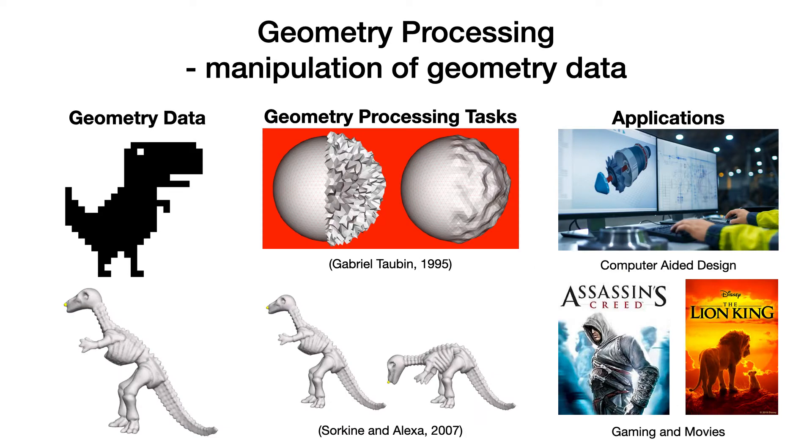Geometric processing refers to manipulation of geometric data, data that represents shapes. Typical geometric processing tasks include smoothing, sharpening, and deformation. These tasks have been powering many real-world applications, including entertainment and industrial design.